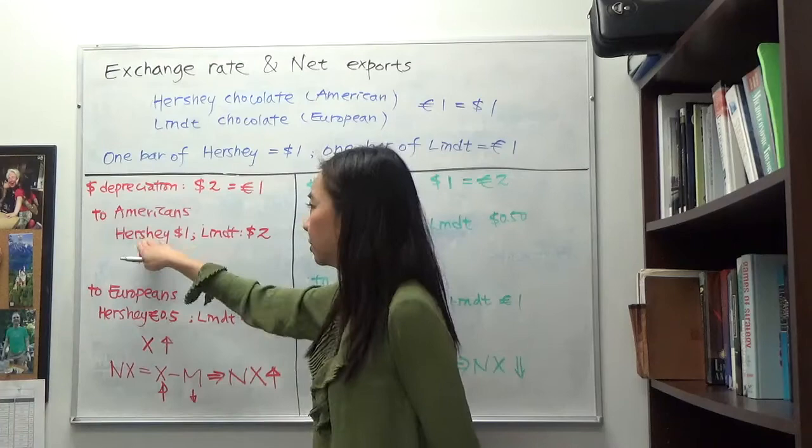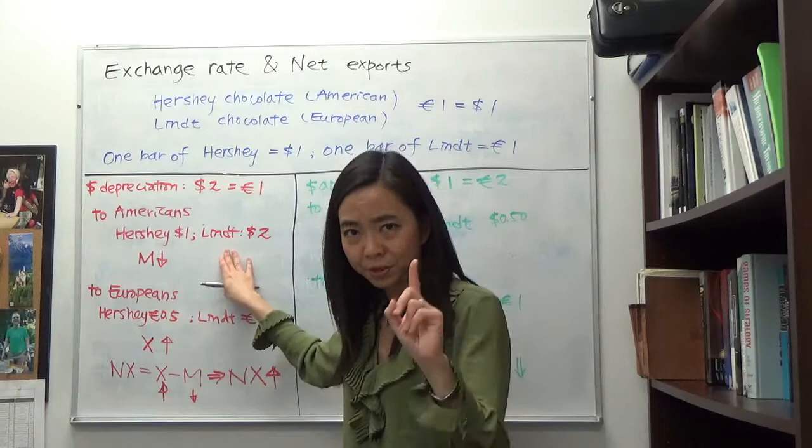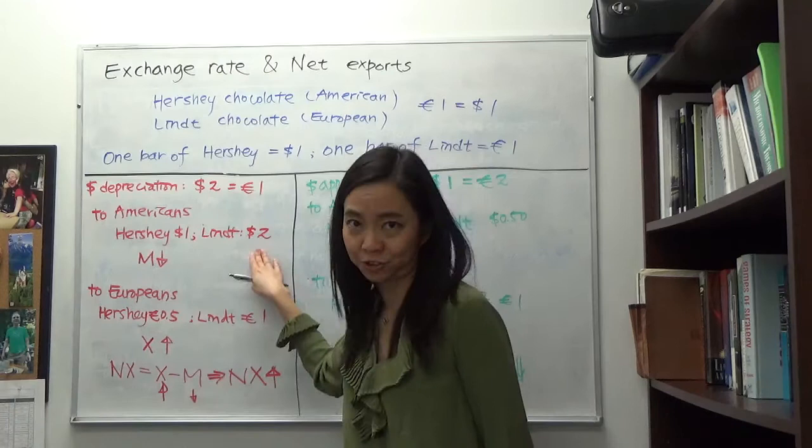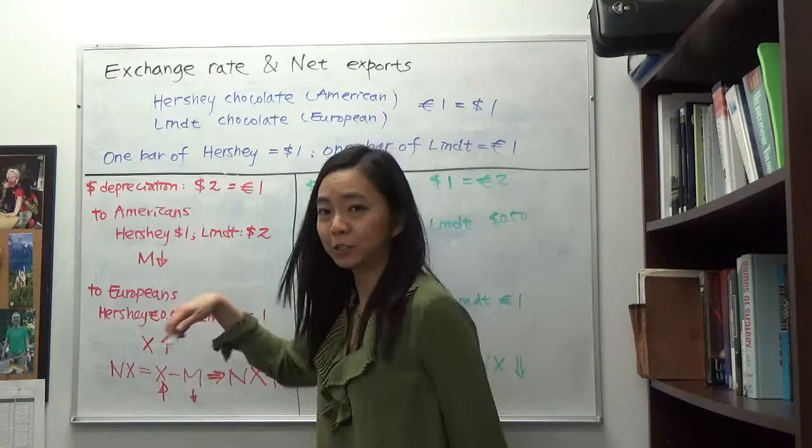To Americans, Hershey is still one dollar. But a bar of Lindt costs one euro, and now you need to pay two dollars to get one euro, so Lindt chocolate for Americans becomes two dollars. You can see Hershey is cheaper than Lindt, so Americans will have less interest in buying Lindt, and therefore our imports are going to go down.